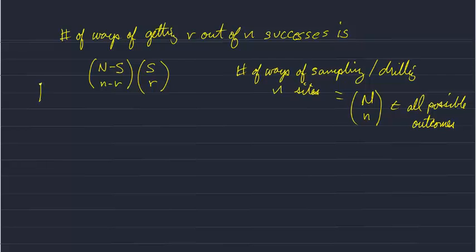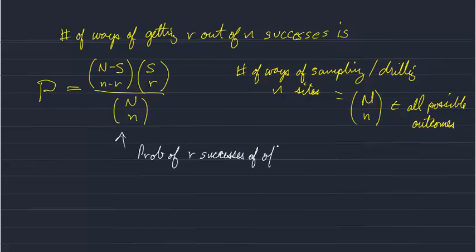To get our probability, we divide by the total number of outcomes. That's the probability of R successes out of N trials. This is the case in which our total population is relatively small, and this is called a hypergeometric distribution.